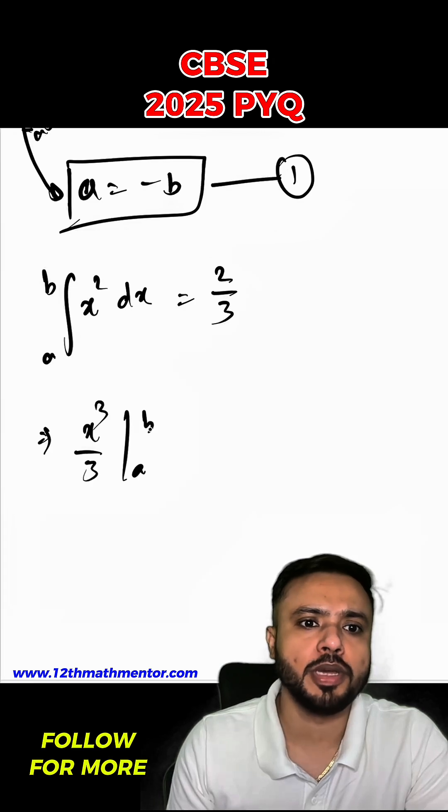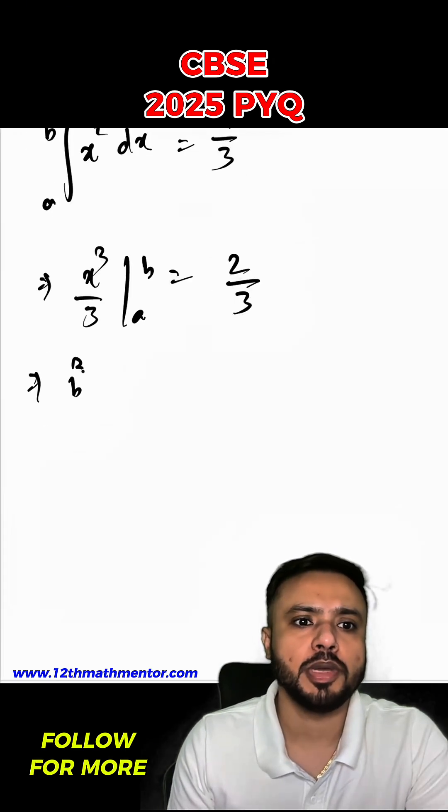So it will be x³ by 3 from a to b equal to 2/3. Hence, I will get b³ minus a³ by 3 equal to 2/3. So this 3, 3 is gone.